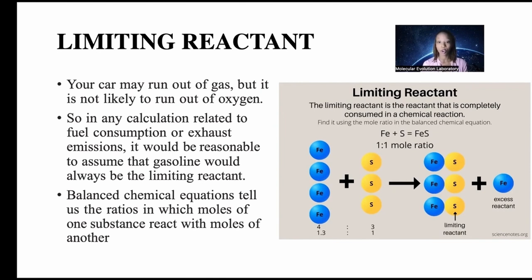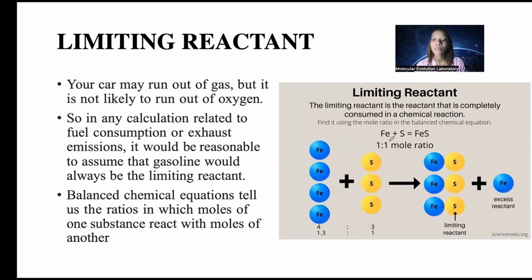The balanced chemical equation tells us the ratio in moles of one substance that reacts with another. You can find the limiting reactant using the mole ratio from a balanced equation. For example: iron + sulfur → iron sulfide (FeS). Here, sulfur is the limiting reactant and iron is in excess.